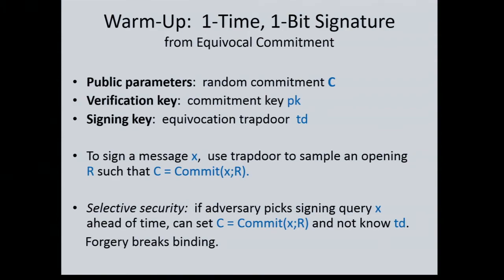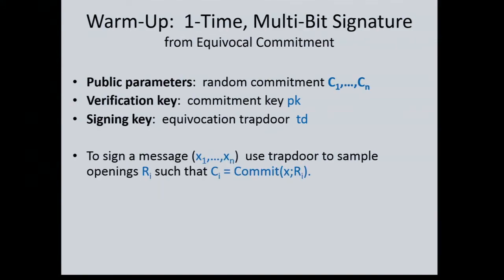These distributions are indistinguishable by the equivocation property — whether you generate the commitment at random and later open it using the trapdoor versus actually committing to the bit ahead of time. For many bits (still one-time), put many random commitments in the public parameters; the signing key and verification key stay short even as public parameters grow with the number of bits.